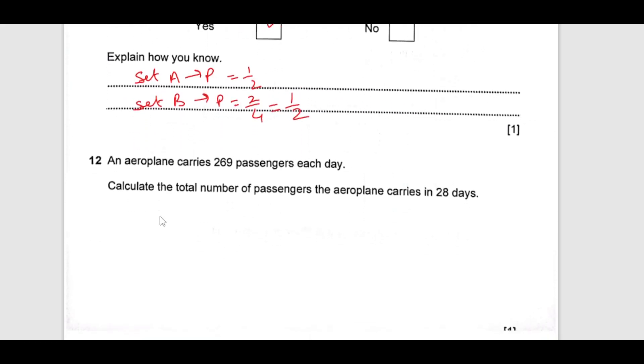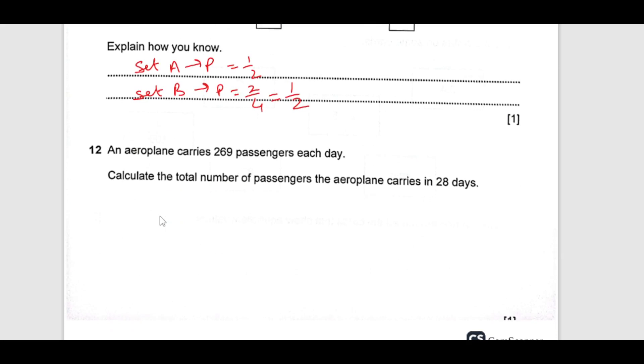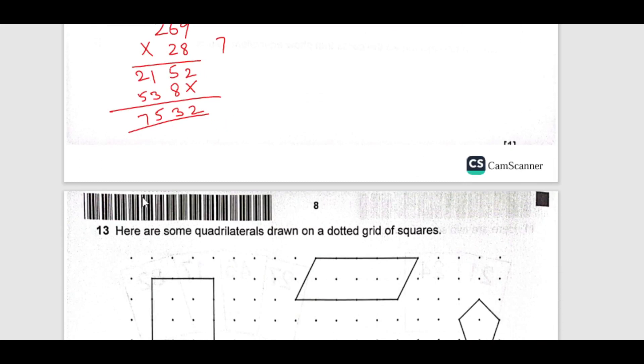Now, next, an aeroplane carries 269 passengers each day, calculate the total number of passengers the aeroplane carries in 28 days. We are looking for the number of passengers carried in 28 days. In one day there are 269. We are just going to multiply 269 by 28. 9 times 8 is 72, we have 7, 8 times 6 is 48 plus 7 is 55, then we have 5 here, 8 times 2 is 16 plus 5 is 21, then we will multiply by 2, then you just add this. This is the final answer.